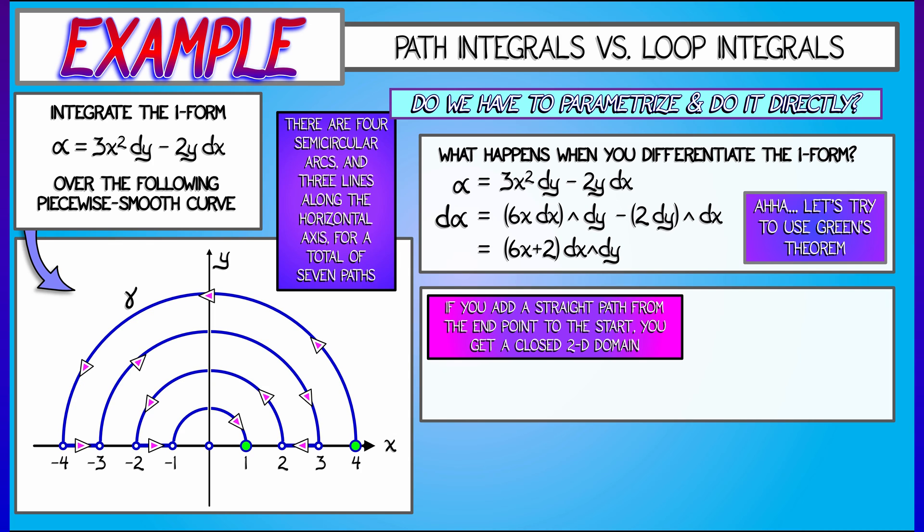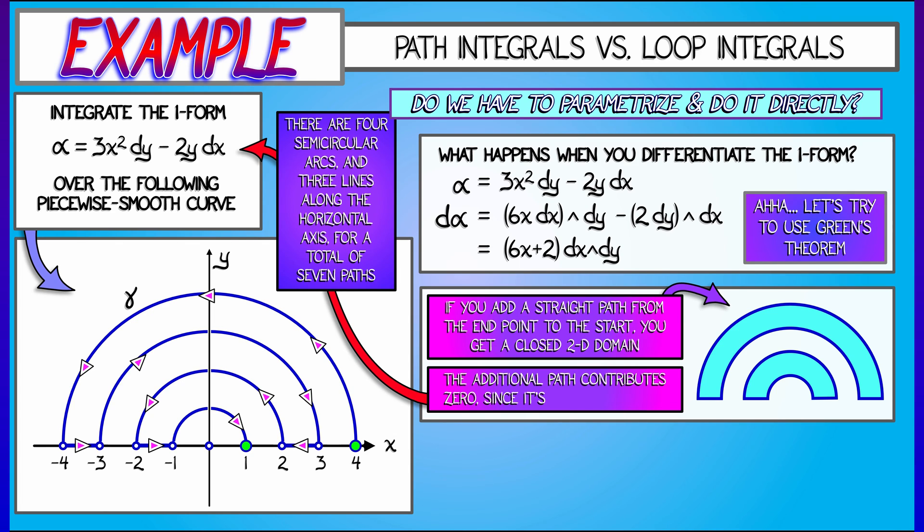Now, when I do so, I cancel out the path from 3 to 2, going to the left. And I'm left with paths that are the oriented boundary of an enclosed region in the plane, a disconnected region of sort of two half annuli as pictured.